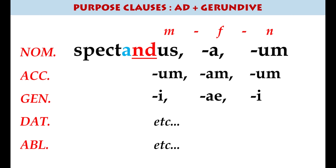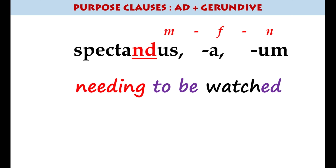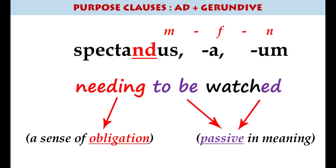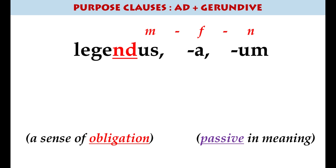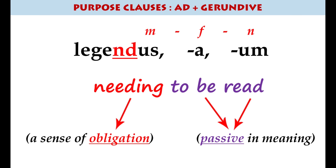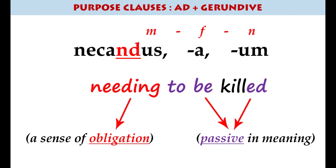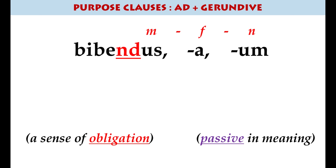If we take a gerundive and look at what it means, it basically expresses the idea of something needing to be done — something needing to be 'somethinged'. So here we have something that needs to be read, or a person who needs to be killed, or something which needs to be drunk.